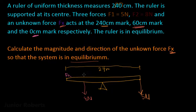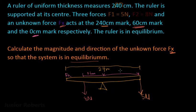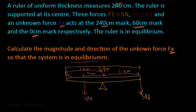Let me put in some dimensions on the diagram. From the zero mark to where F2 acts is 0.6 meters. From F2 to the midpoint pivot is 1.2 meters, and similarly from the pivot to the end where F1 acts is 1.2 meters.